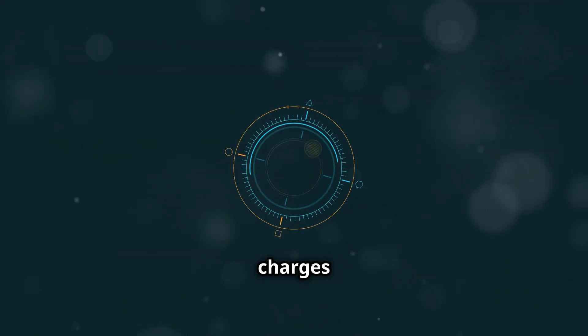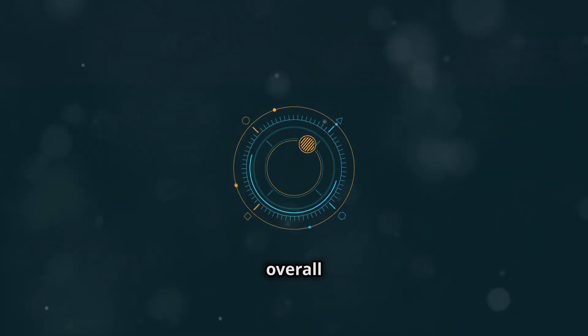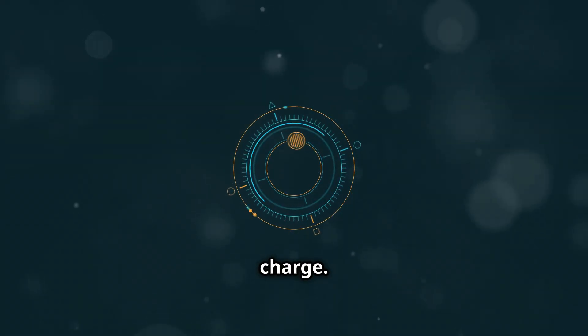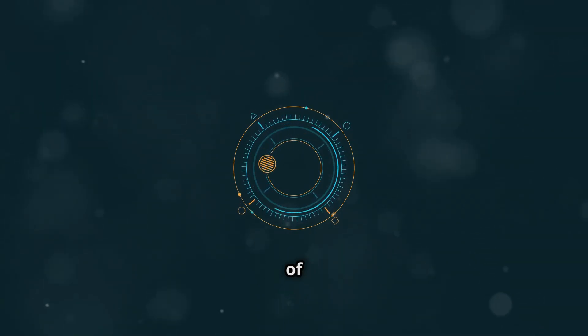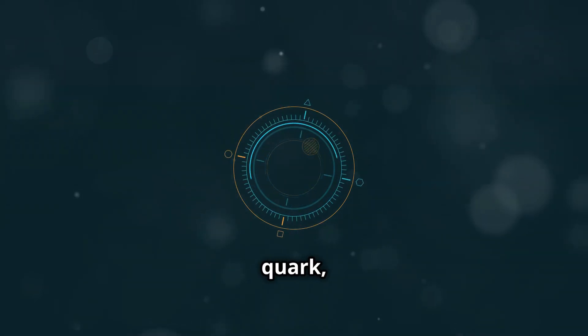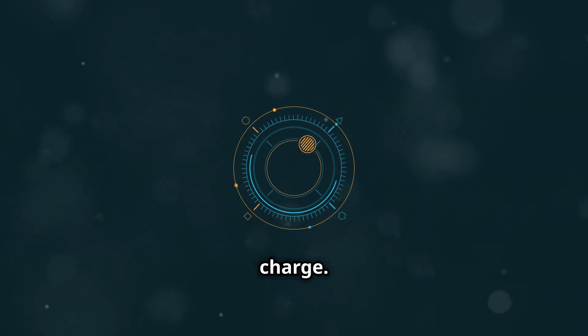It's these fractional charges that give protons and neutrons their overall electric charge. For instance, a proton is made up of two up quarks and one down quark, giving it a net positive charge.